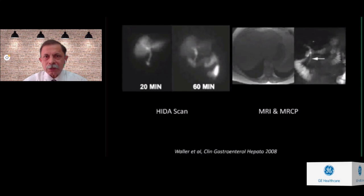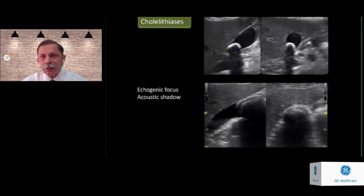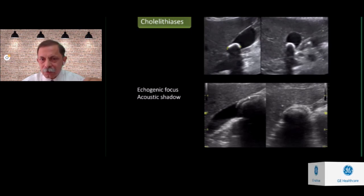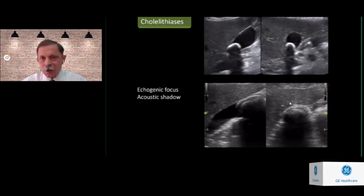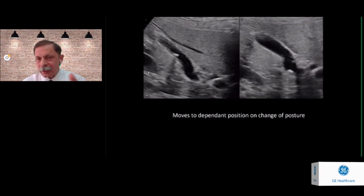Cholelithiasis is the commonest problem we encounter. Typically, stones appear as echogenic foci producing an intense acoustic shadow. The first interface of the stone usually produces intense reflections, though sometimes you may get a double-layered appearance depending on the consistency of the gallstone. Another characteristic is that gallstones are mobile within the gallbladder — if you ask the patient to turn or stand erect, the gallstone moves to the dependent part, which is very useful for differentiating a suspect gallstone from a polyp.